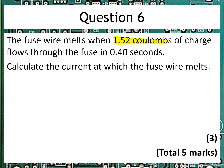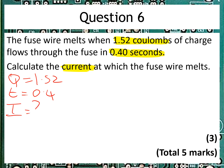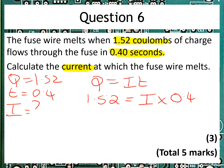We've got 1.52 Coulombs of charge and time in seconds, and we're asked to calculate the current. So Q, the charge, is equal to 1.52 and time is 0.4 seconds, and we're trying to find I. We know that Q equals I times t, so putting the numbers in: 1.52 is equal to I multiplied by 0.4. Rearranging: I equals 1.52 divided by 0.4, which gives us 3.8 amps. We haven't been given the units here, so we mustn't forget to put those in — that's why there's an extra mark for this question.